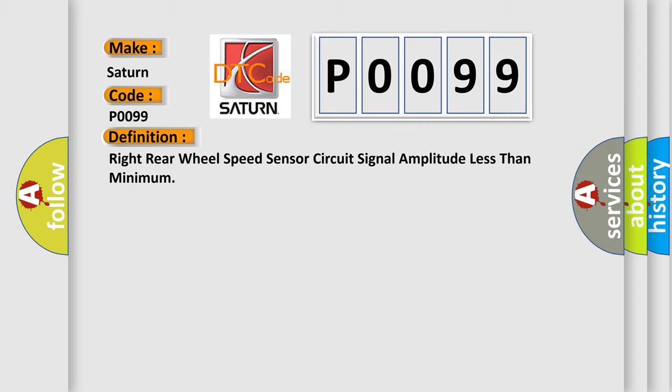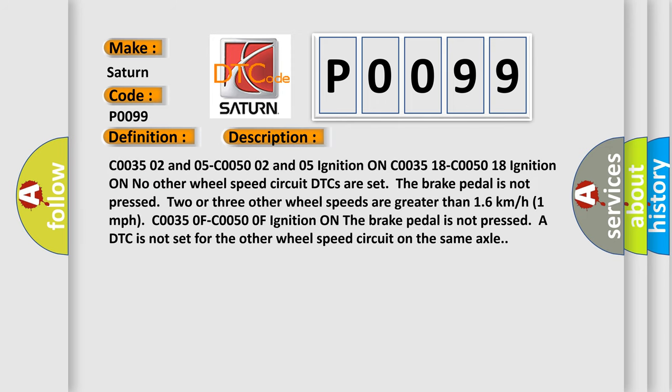And now this is a short description of this DTC code. C0035 02 and 05, C0050 02 and 05, ignition on, C0035 18, C0050 18. Ignition on, no other wheel speed circuit DTCs are set. The brake pedal is not pressed. Two or three other wheel speeds are greater than 16 km per hour. C00350F, C00500F, ignition on, the brake pedal is not pressed. A DTC is not set for the other wheel speed circuit on the same axle.